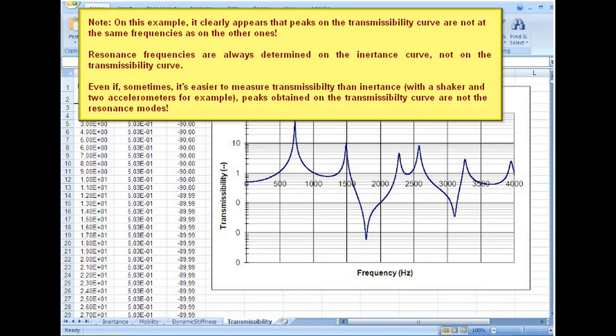Note on this example, it clearly appears that peaks on the transmissibility curve are not at the same frequencies as on the other ones. Resonance frequencies are always determined on the Inertance curve, not on the transmissibility curve.